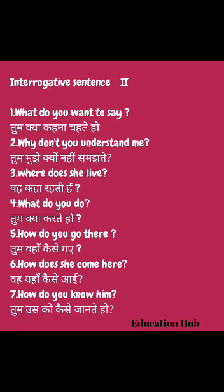Now sentences starting with question words — what, why, where, how: 'What do you want to say?' — تم کیا کہنا چاہتے ہو؟ 'Why don't you understand me?' — تم مجھے کیوں نہیں سمجھتے؟ 'Where does she live?' — وہ کہاں رہتی ہے؟ 'What do you do?' — تم کیا کرتے ہو؟ 'How do you go there?' — تم وہاں کیسے گئے؟ 'How does she come here?' — وہ یہاں کیسے آئی؟ 'How do you know him?' — تم اسے کیسے جانتے ہو؟